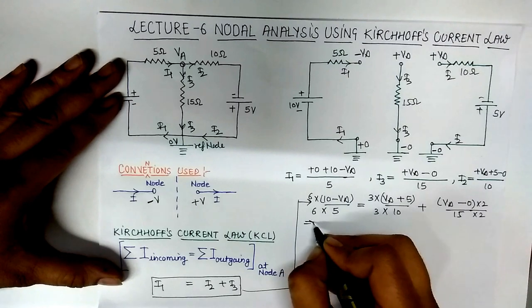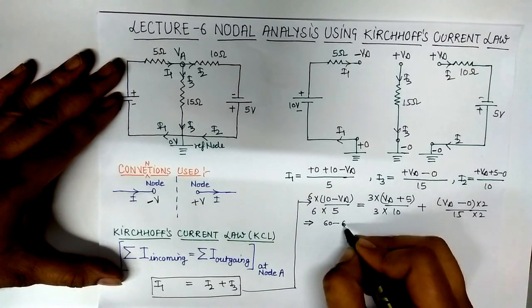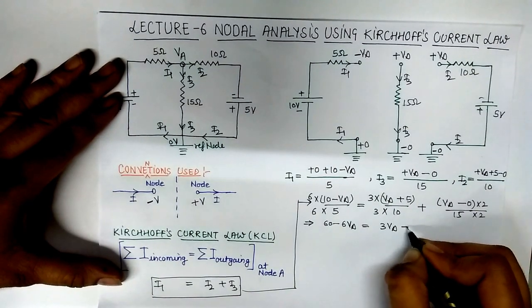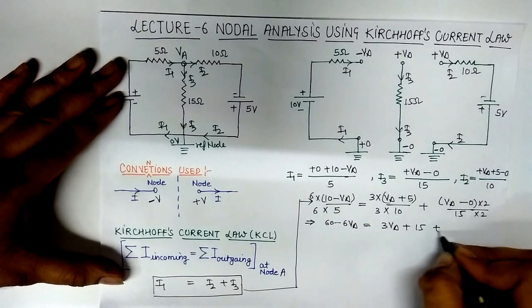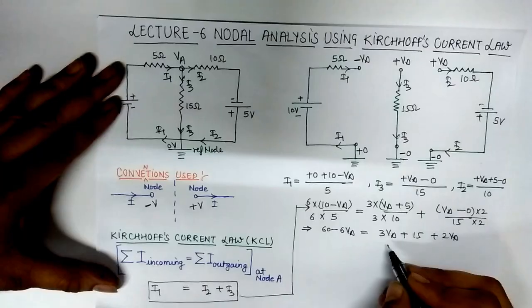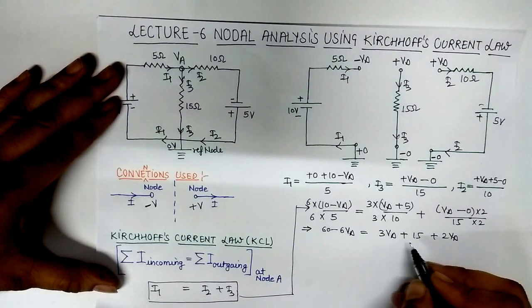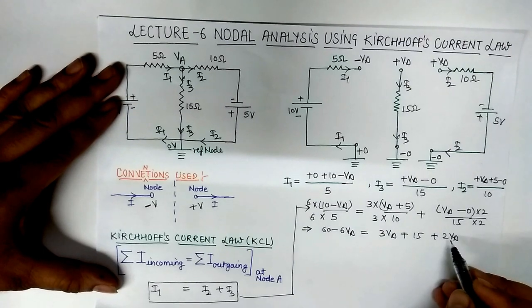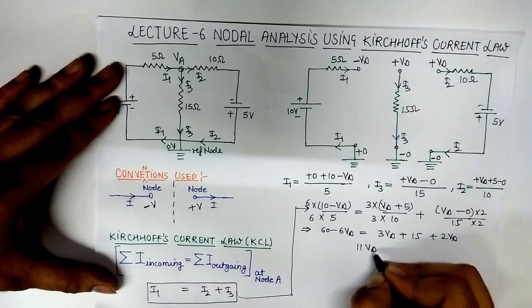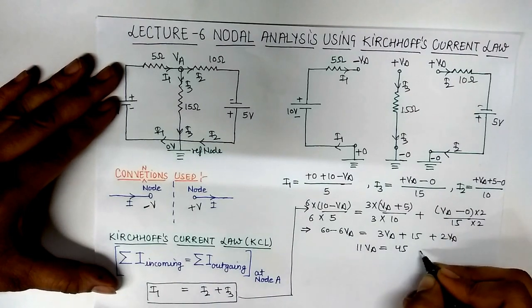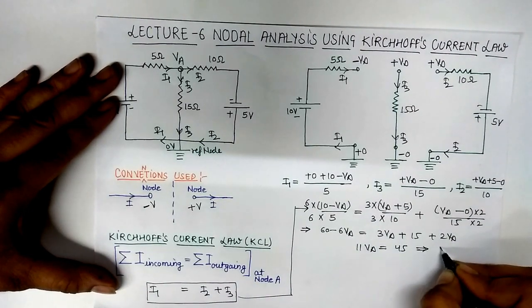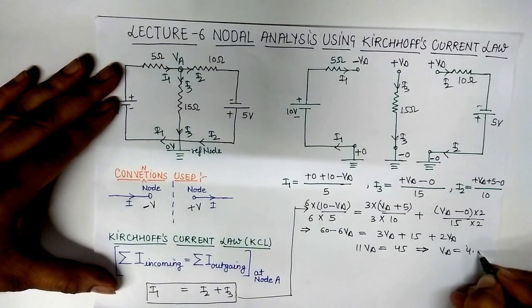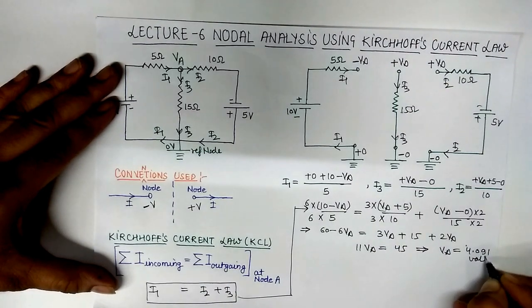We solve this equation: 60 minus 6VA is equal to 3VA plus 15 plus 2VA. 3VA plus 15 plus 2VA. So we solve: 6, 3, and 2, this is 11VA is equal to 45. So this is 4.091 volts by using calculator.